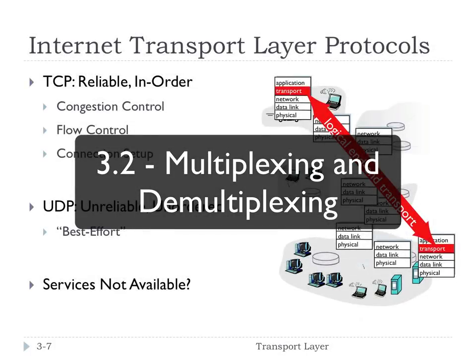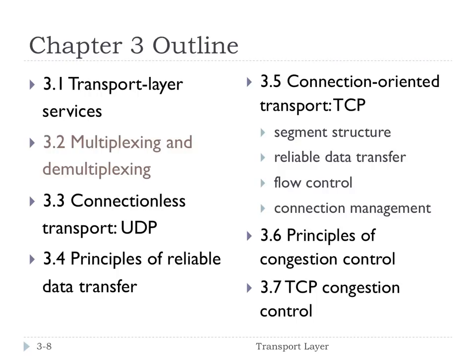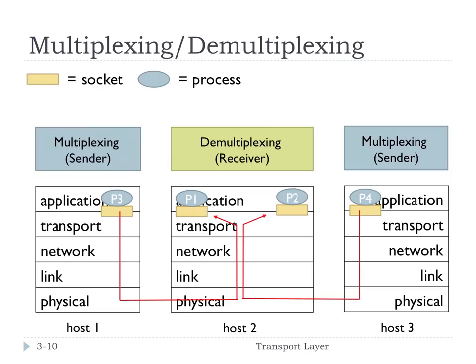Let's talk about multiplexing and demultiplexing. Visually, multiplexing is about taking several things and pushing them onto one channel. Demultiplexing is taking them out and separating them back again. This is an intuitive visual explanation. The next slide is going to show this with more technical network detail.